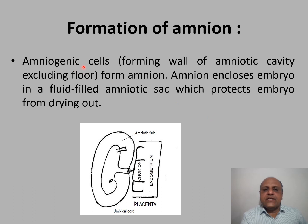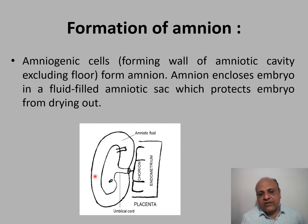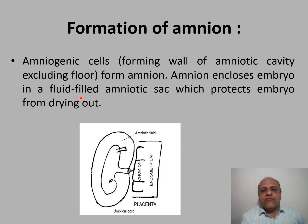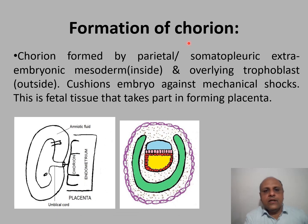The amniogenic cells form the amnion, constituting the wall of the amniotic cavity excluding the floor. The amnion encloses the embryo in a fluid-filled amniotic sac. This sac contains amniotic fluid which protects the embryo from drying out.